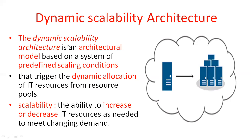The dynamic scalability architecture is an architectural model based on a system of pre-defined scaling conditions. Based on certain conditions — pre-defined conditions — this model triggers the dynamic allocation of IT resources from the resource pool. It will scale up or scale down, that means vertical scaling or horizontal scaling, based on the requirement. That's called dynamic scalability.